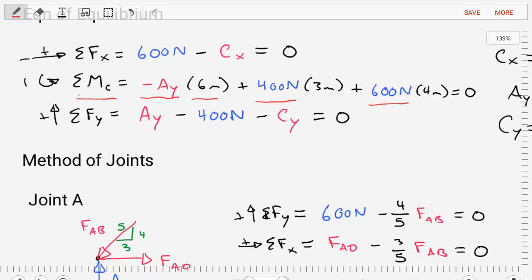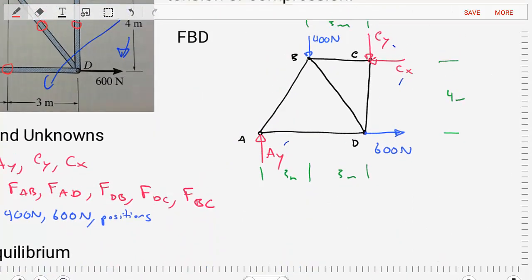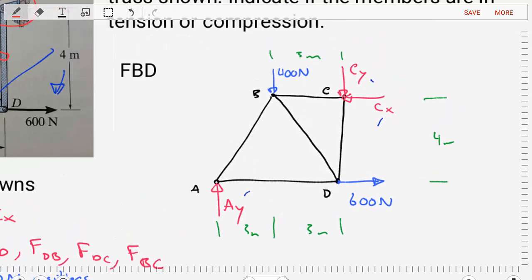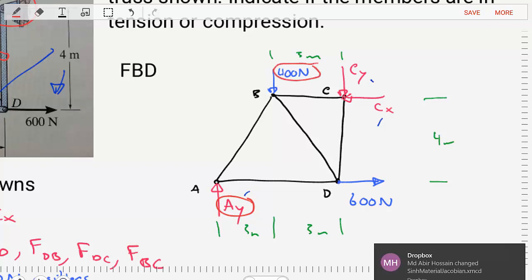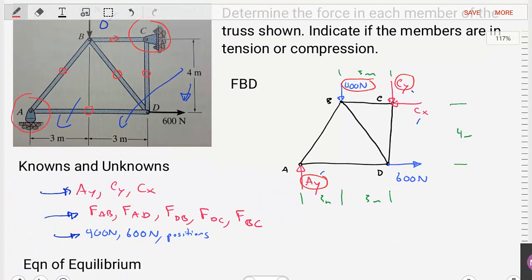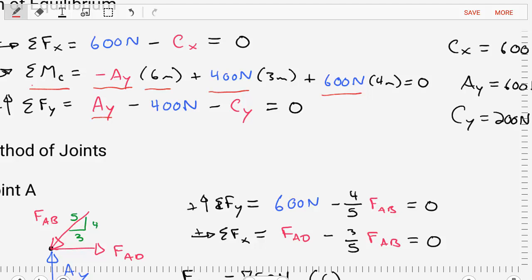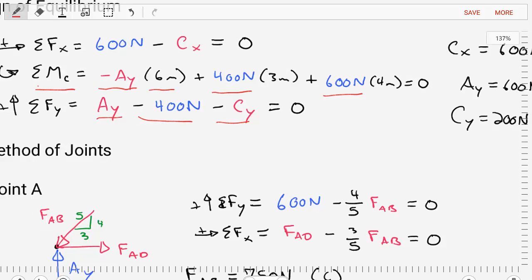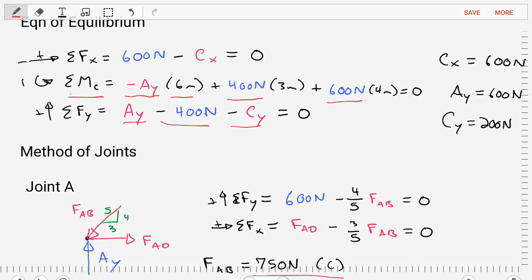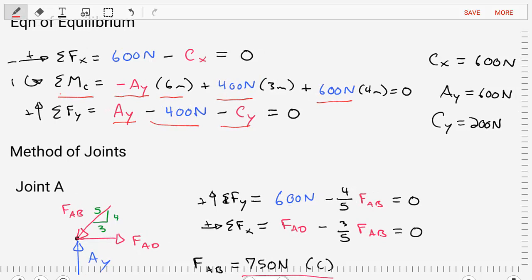Lastly, the sum of forces in the Y direction: we have AY going up, 400 newtons going down, and CY going down, giving us AY minus 400 newtons minus CY equals zero. We now have three equations with three unknowns and can solve them. We find CX equals 600 newtons, AY equals 600 newtons, and CY equals 200 newtons. All reactions are now found.